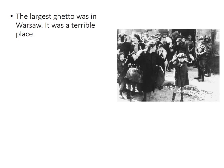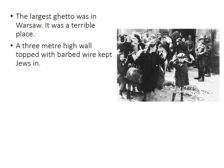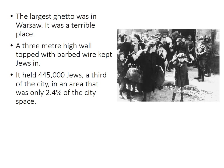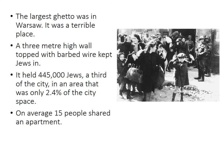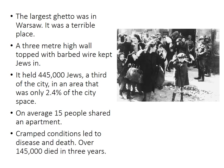The most famous of these ghettos was Warsaw. The Warsaw Ghetto was a terrible place — there was a three-metre high wall topped with barbed wire that kept the Jews in. That ghetto held nearly half a million Jews — a third of the population of Warsaw — yet the ghetto was in an area that was only 2.4% of the city. You can imagine the conditions inside. On average 15 people shared each apartment, and those cramped conditions led to awful disease and death. Over 145,000 people died in the Warsaw Ghetto in three years.